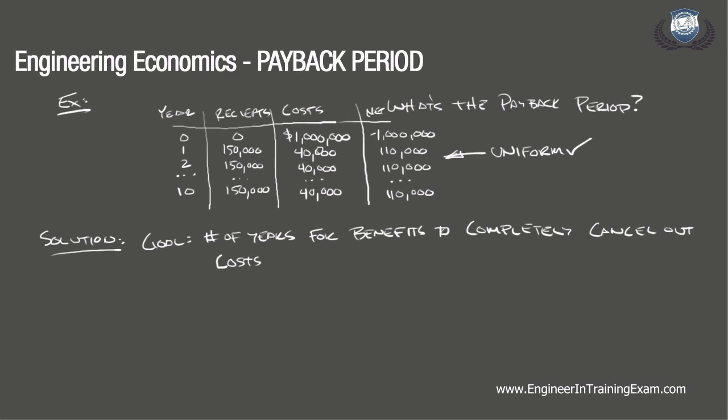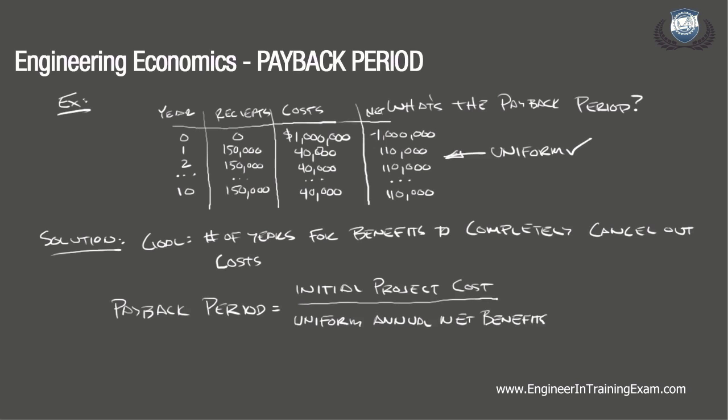Observing the net cash flow, we note that a net profit begins flowing starting in year 1 and continuing annually in a uniform manner. This allows us to simply take the initial cost of the project and divide it by the uniform annual net benefits to determine the number of years. The payback period equals the initial project cost divided by the uniform annual net benefits, which is $1,000,000 divided by $110,000, equal to 9.1 years.